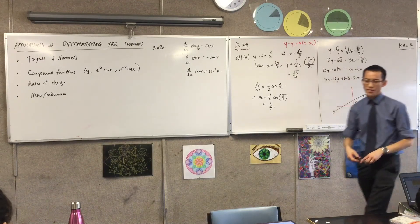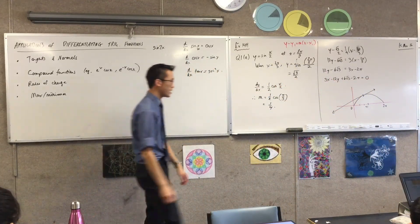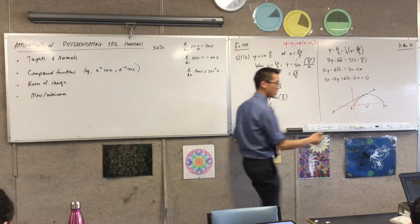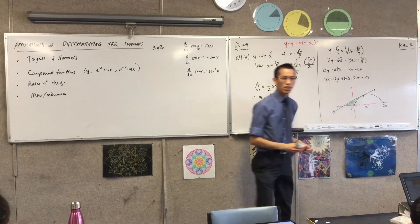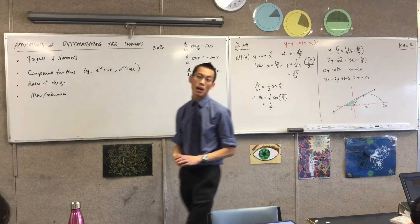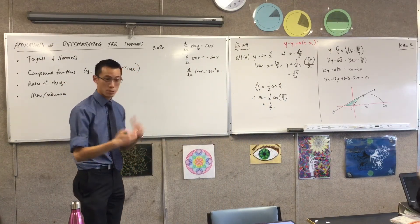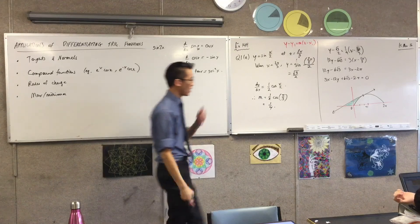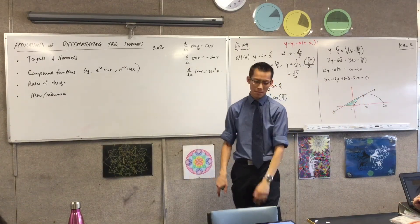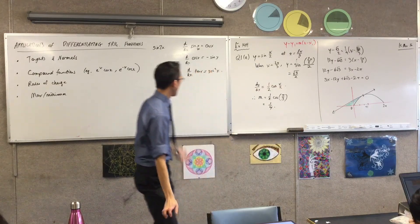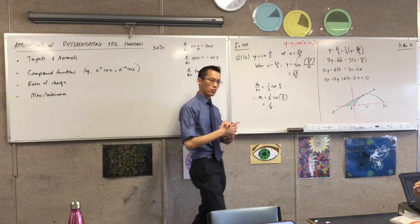We haven't dealt with integration yet, but a very common follow-up question would be: 'Hence, determine the area here.' It's not hard — you can do it as a subtraction of areas: work out this one, work out that one, and off you go. These are the kinds of places where it's going. This is just the warm-up — what can you do with this?